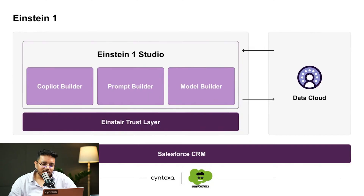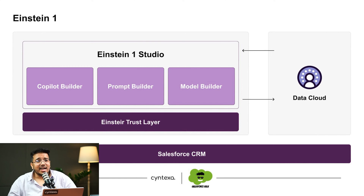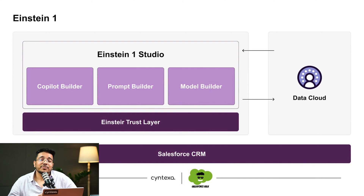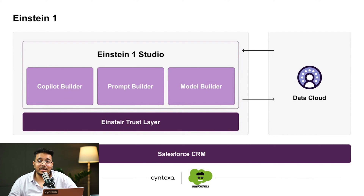This next diagram depicts what is inside the Einstein One Platform. It has Salesforce CRM, Data Cloud, and Einstein One. In Einstein One, there are primarily three things involved. The first is the Einstein Trust Layer — a layer which allows Salesforce to transmit data in a way that's safe, following all ethical norms a business would look for, ensuring the data remains compliant according to governance and compliance rules.